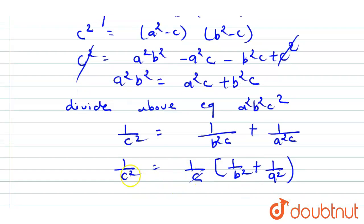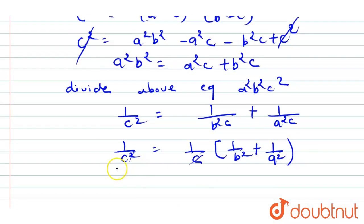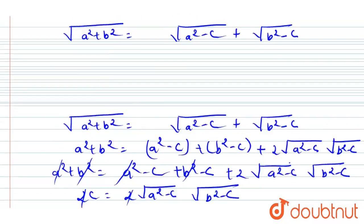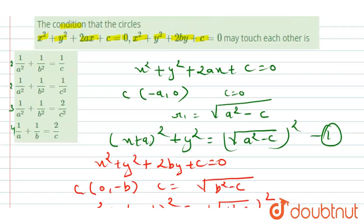Dividing both sides by a²b²c, we get 1/c² = 1/(b²c) + 1/(a²c). Taking 1/c as common, we get 1/c · (1/b² + 1/a²), so 1/c = 1/a² + 1/b². This matches option number one, which is the correct answer.